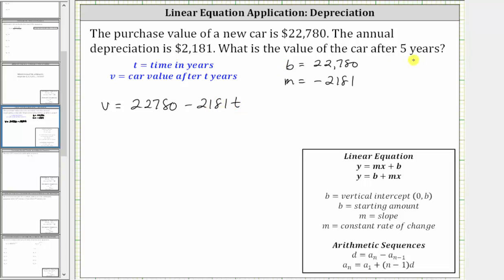So to determine the value of the car after five years, we set t equal to five. When t is five, the value of v is equal to 22,780 minus 2,181 times five.